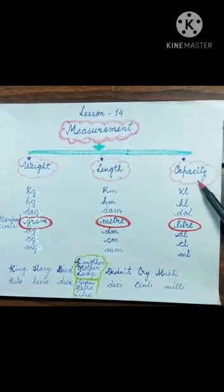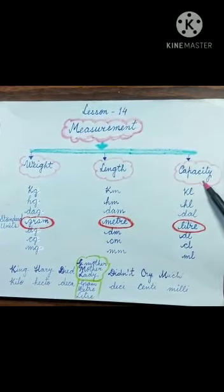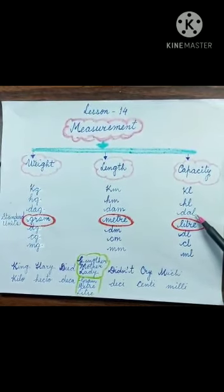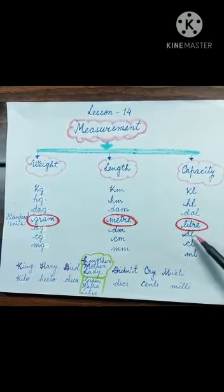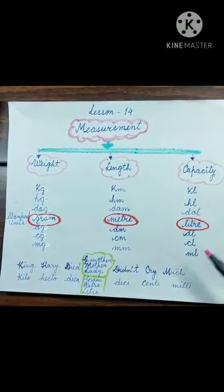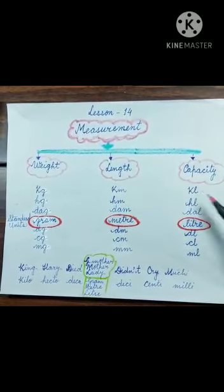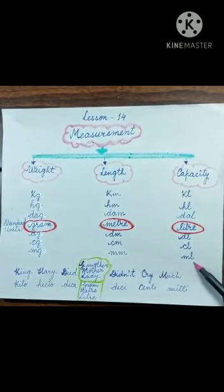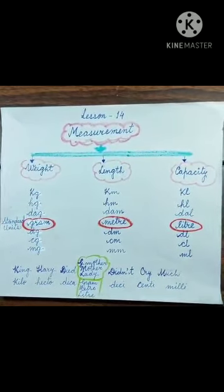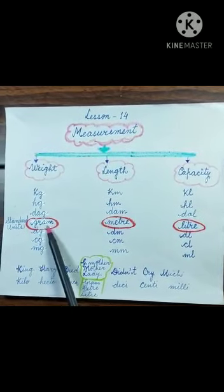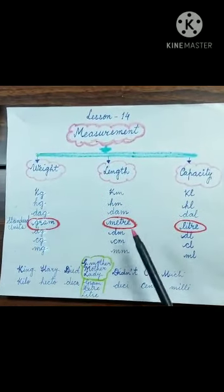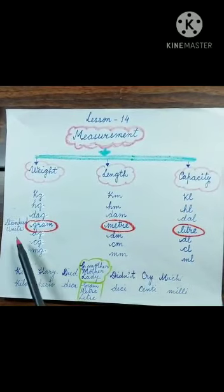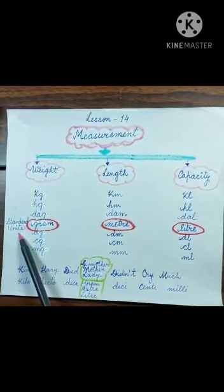Capacity means when we measure liquids: kiloliter, hectoliter, decaliter, liter, deciliter, centiliter and milliliter. Same way the biggest unit is kiloliter and milliliter is the smallest. Gram for weight, meter for length and liter for capacity are called the standard units.